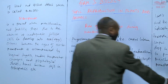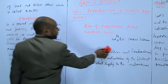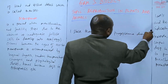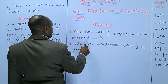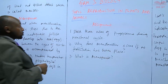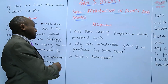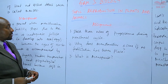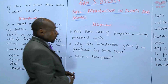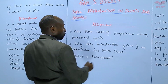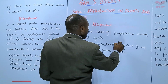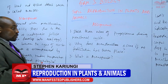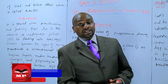We have an assignment on the role of progesterone. The assignment has three questions: Number one, state three roles of progesterone during the menstrual cycle. Number two, why does menstruation occur if no fertilization has taken place? And number three, what is menopause? We will stop there until next time. Goodbye.